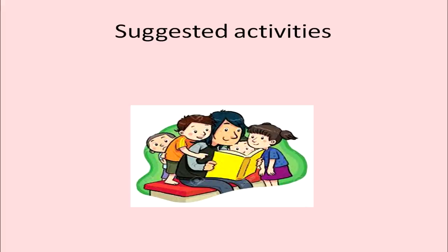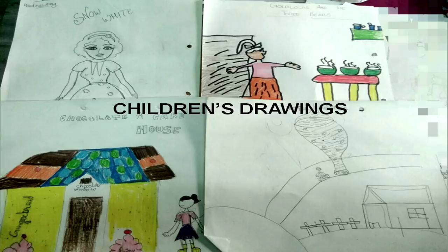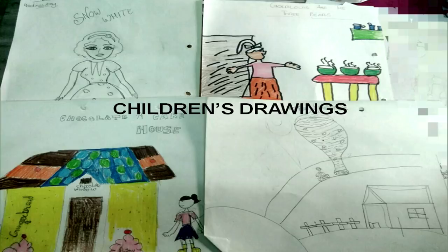Now I am going to suggest a few activities related to storytelling that can be used in the classroom. First, we can explore storytelling through children's drawings. After narrating a story to the children, or if a story is narrated by the children themselves, we can ask them to draw any particular character from the story that they like or any scene from the story. We can also ask them, while they are drawing or after the drawing is completed, what they have drawn. This will lead to a dialogue with the children and they will become more confident about speaking about what they have drawn.